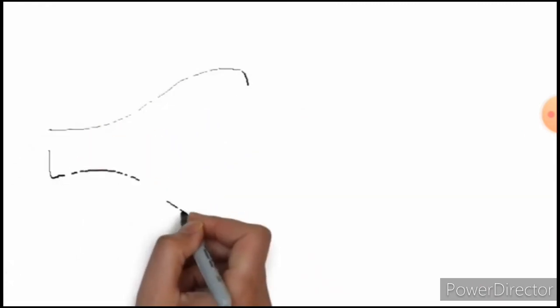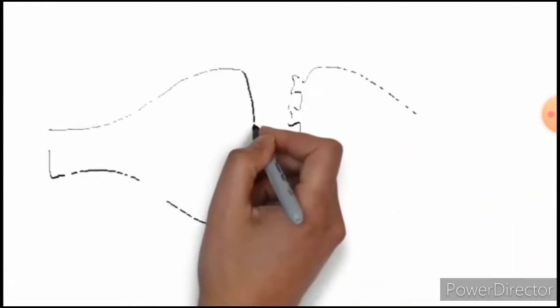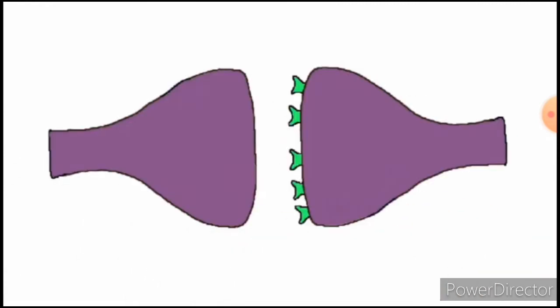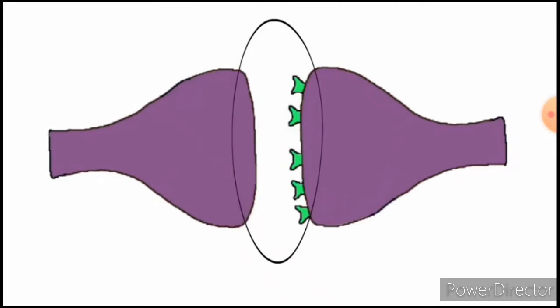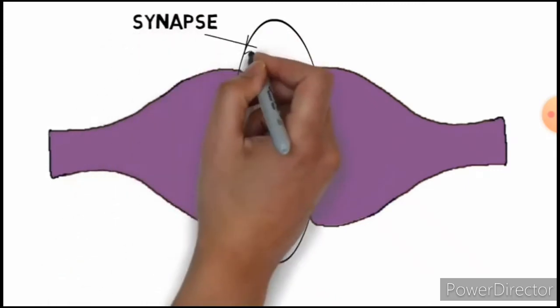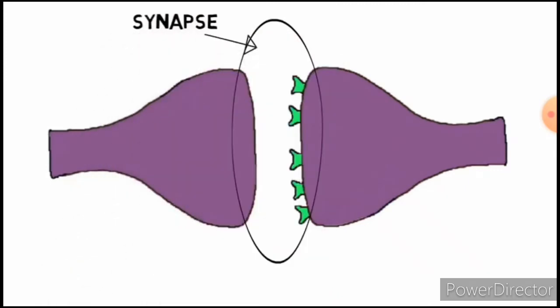Most communication between neurons occurs at a specialized structure called a synapse. The synapse is an area where two neurons come close enough to one another that they are able to pass chemical signals from one cell to another. The neurons are not actually connected, but are separated by a microscopically small space called the synaptic cleft. The cleft is less than 40 nanometers wide.